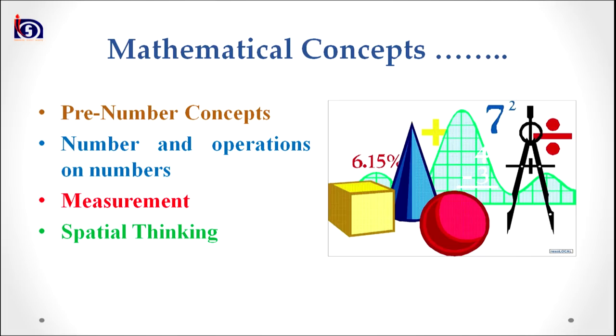There are also different categories of mathematical concept. We distinguish or categorize mathematical concepts into four categories. The first category is pre-number concept. The second is number and operation on numbers. The third is measurement concept. And the fourth is spatial thinking concept. We will deal with each of the categories separately one by one.